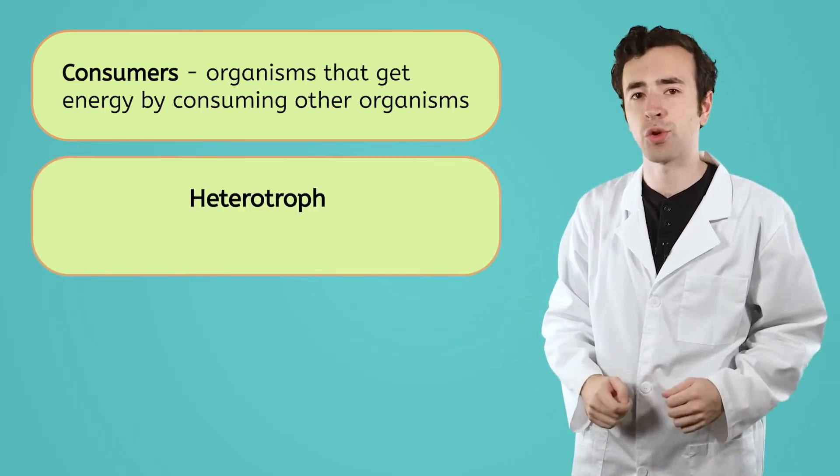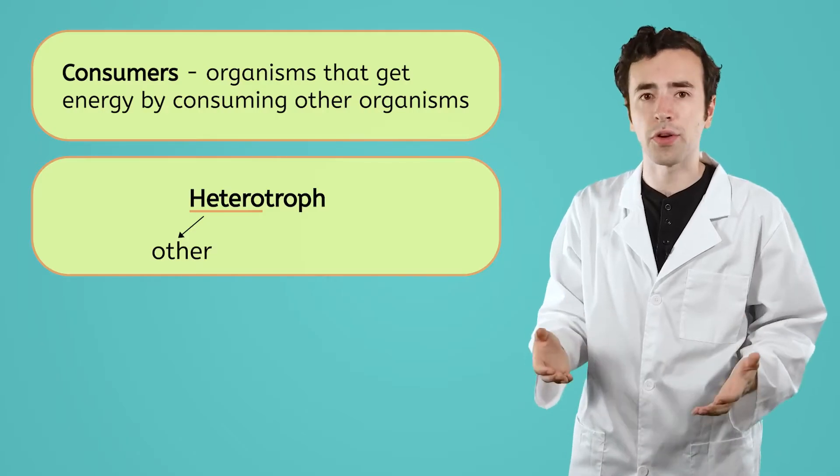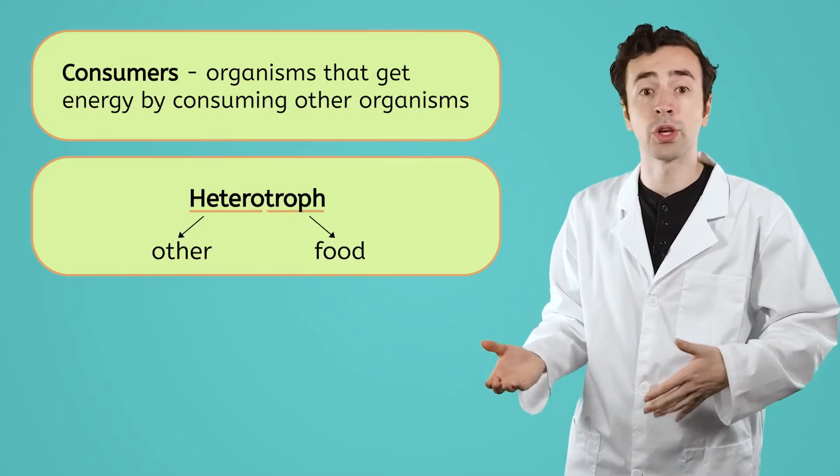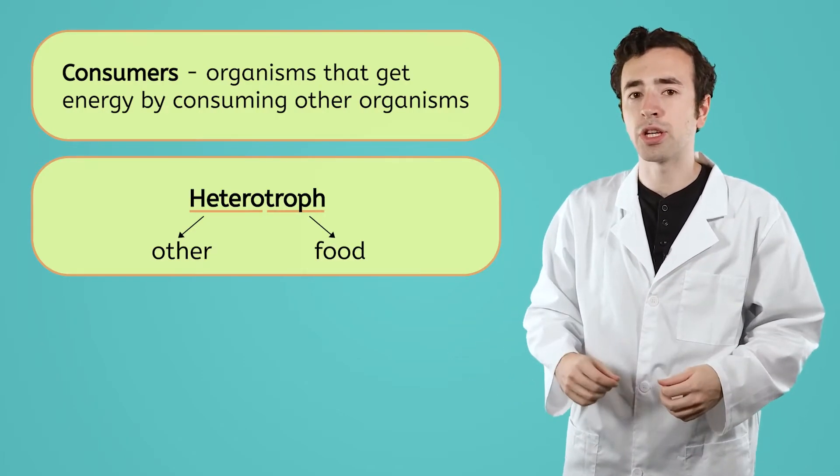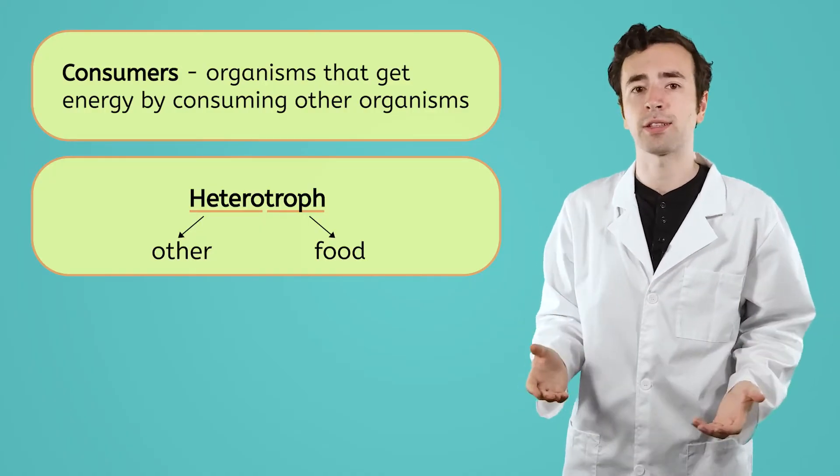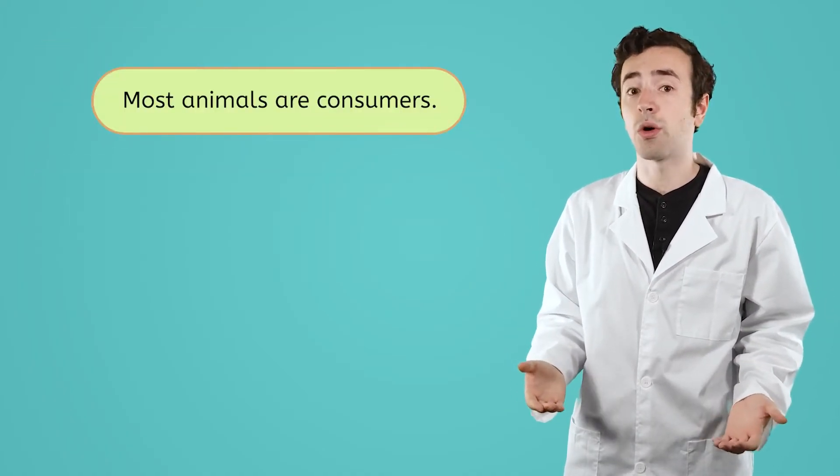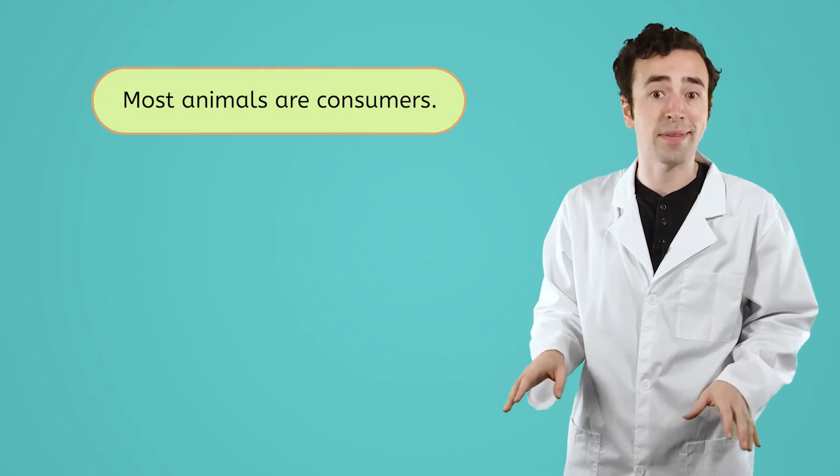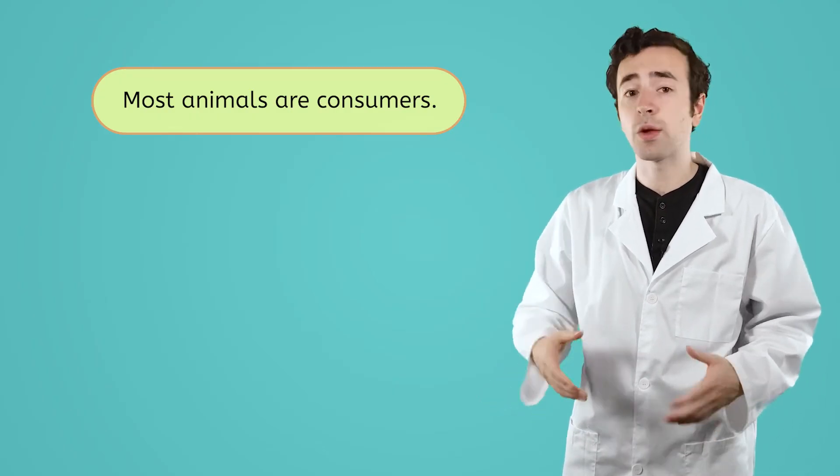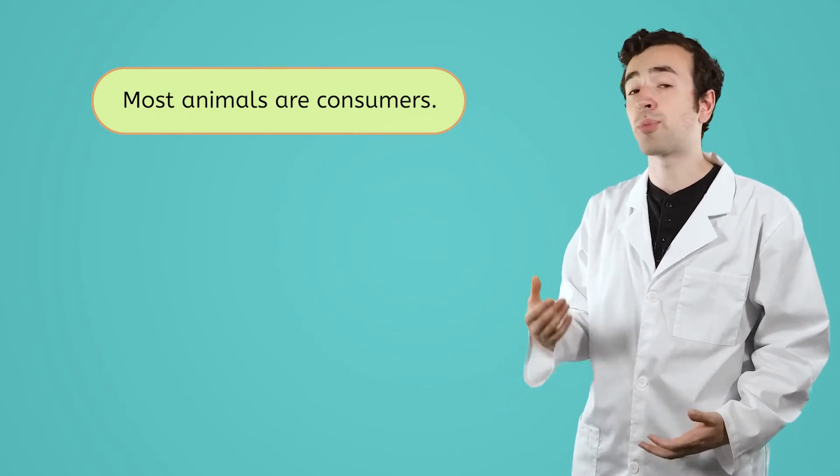Consumers are called heterotrophs. Hetero meaning other, and trof again meaning food. So heterotrophs get their energy from other living things. Most animals are consumers because they cannot make their own food. Instead, they rely on the energy production of producers.